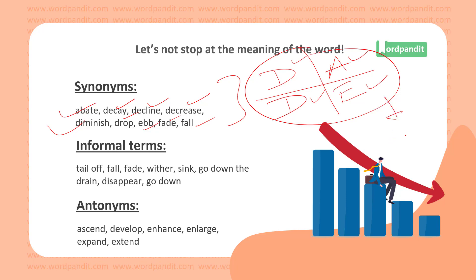Remember dwindle, diminish, abate, and ebb with the context of something declining or reducing — that's the cluster you've got to form. Every time you discover one of these four words, try to recall the other three. So if you read 'ebb' somewhere and something has ebbed away, recall the other words in the cluster — that is how your word power is going to increase.